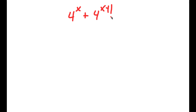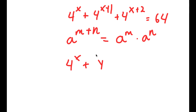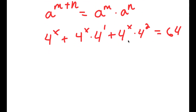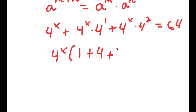In this problem, I have 4 to the power of x plus 4 to the power of x plus 1 plus 4 to the power of x plus 2, all equal to 64. Using the property of exponents — a to the power of m plus n equals a to the power of m times a to the power of n — 4 to the power of x plus 1 equals 4 to the power of x times 4, and 4 to the power of x plus 2 equals 4 to the power of x times 4 squared. Now I'm going to factor out 4 to the power of x, giving 4 to the power of x times 1 plus 4 plus 4 squared.